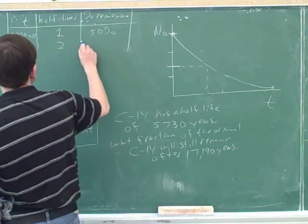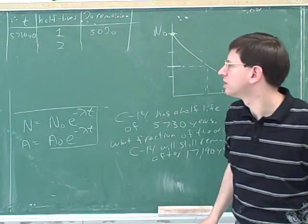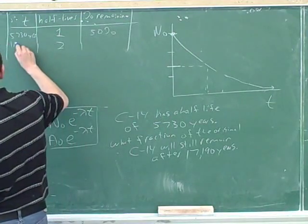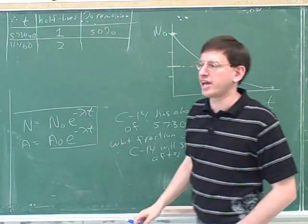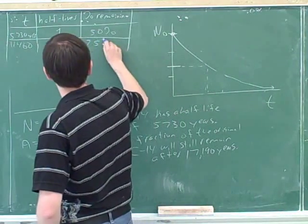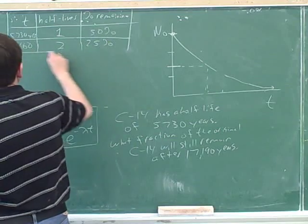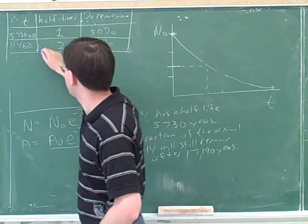Then how much time has passed after two half-lives? You should calculate here if you want. 11,460. And what percent of the original nuclei remain? 25%.